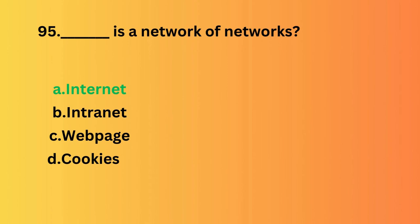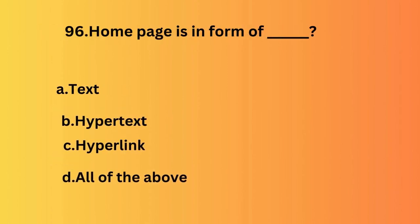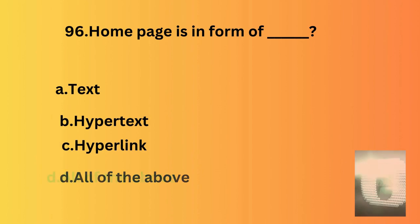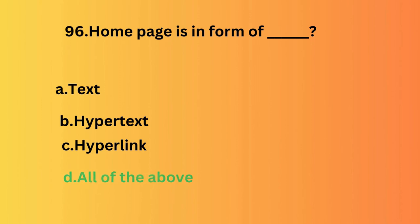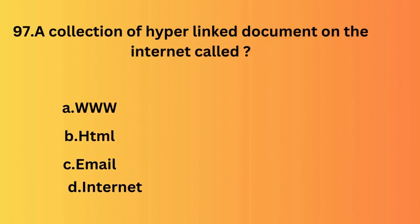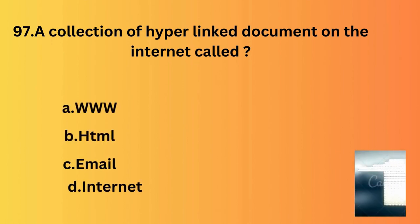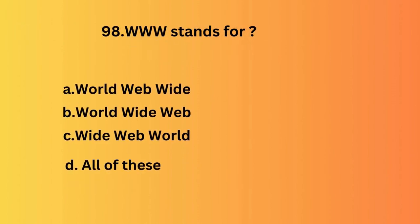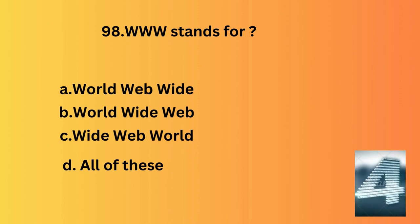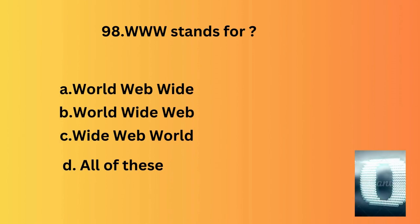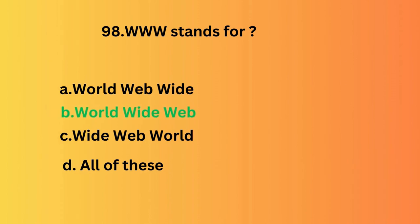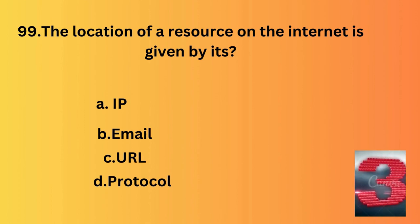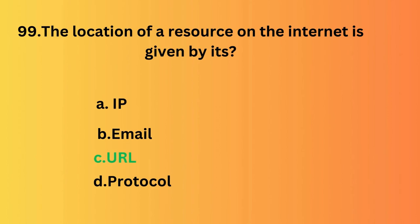Network of networks — the answer is internet. Home page is a form of — the answer is all of the above. A collection of hyperlinked documents on the internet is called — World Wide Web. WWW stands for — the answer is World Wide Web. The location of resources on the internet is given by — the answer is URL.